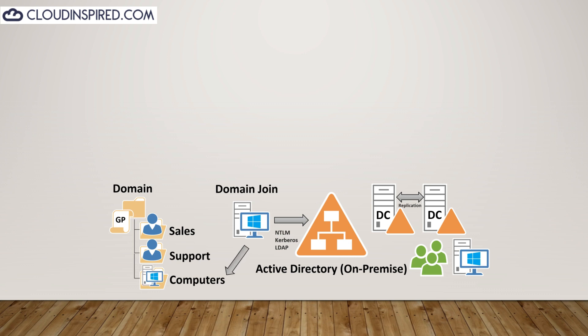When a device joins the domain, a computer object is created in Active Directory under the computers OU. You end up with a structure of computers that have joined the domain in the AD database. Each DC containing Active Directory was normally present in an office location or data center — what we call on-premise.